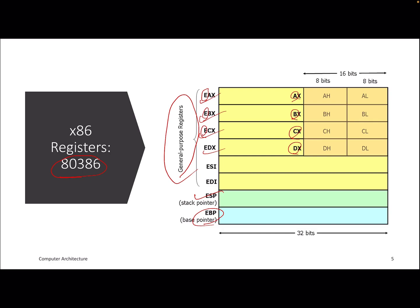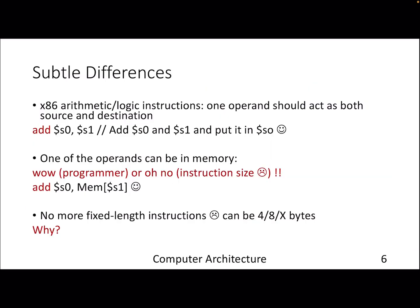Some of the differences are in x86, one of the operands can act both as source and destination. So you can actually have this instruction called AND the content of register S0 and S1 and store it in S0 itself. And one of the operands can be in memory. So wow, this is a completely new thing we haven't seen this kind of instructions.